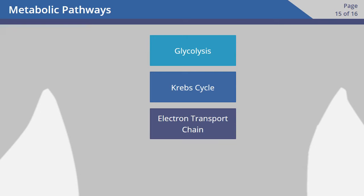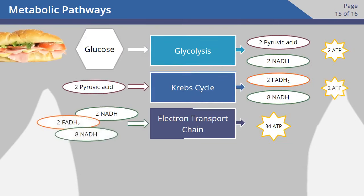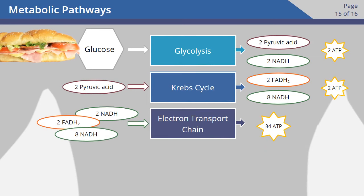The human body uses a number of processes to convert a turkey sandwich into the energy it needs to fuel your body, create new tissue, and repair any damage. This was a brief overview of how these processes work together to turn food into the ATP cells need.